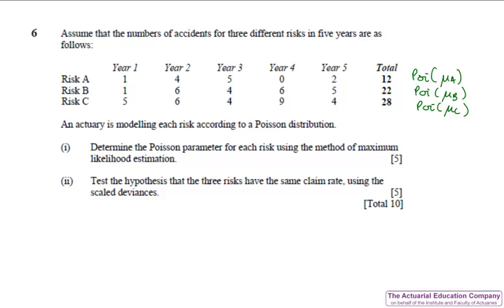Part two of the question would have been more confusing had you not seen this question before. We're asked to test whether the three risks had the same claim rate using the scale deviances. Recall that the difference in scale deviances is approximately a chi-squared distribution with the difference in parameters. Our model in part one had three parameters, mu A, mu B, and mu C, and we're testing whether they have the same claim rate, i.e. whether they have one parameter, mu, and so we'll have a chi-squared two.